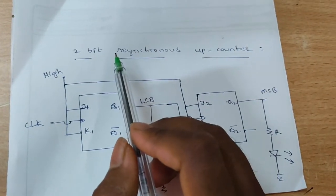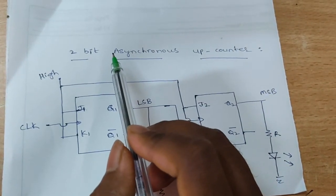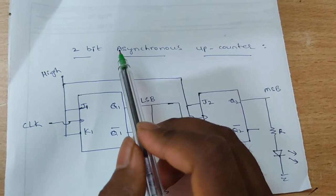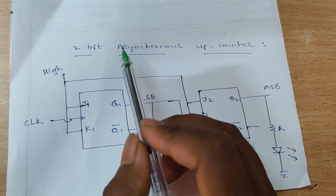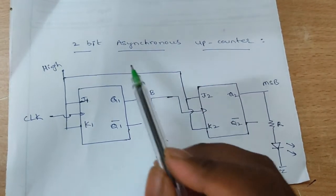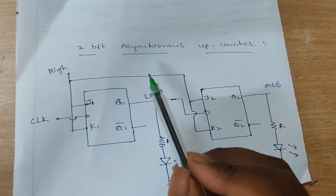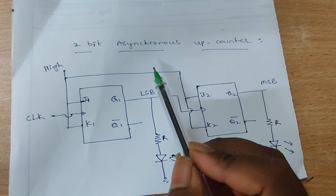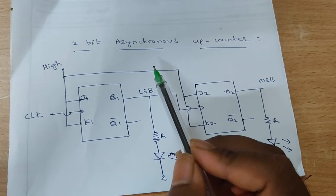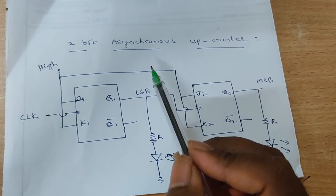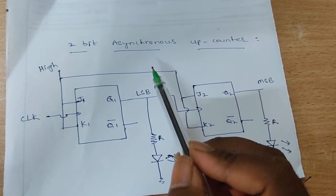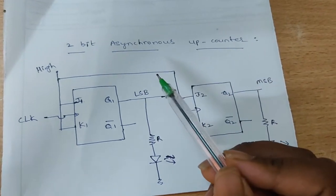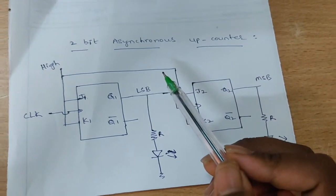Hi students, today's experiment is the 2-bit asynchronous sub-counter. A counter is used to count the number of clock pulses that is applied at the input.